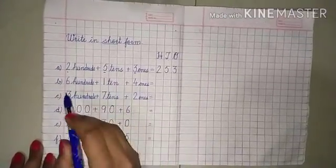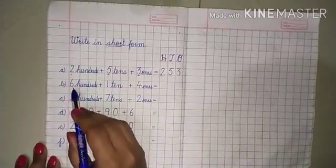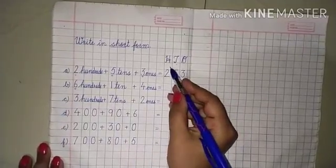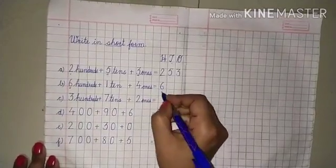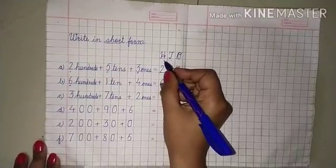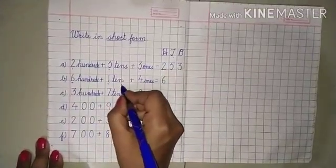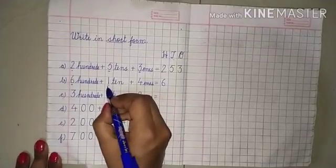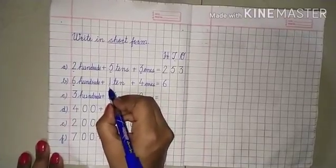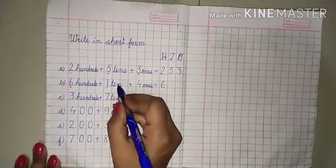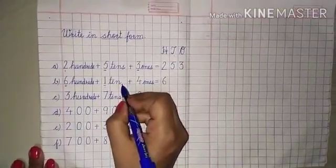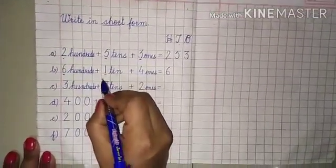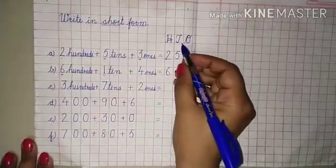Now the next question: six hundred. Six hundred — six will go under H. Next, one ten. Note that S is not added because only one is written here. If the number after one — two, three, four, five — comes, then we use tens. If one is there, it is called one ten. One will come under the heading of T.